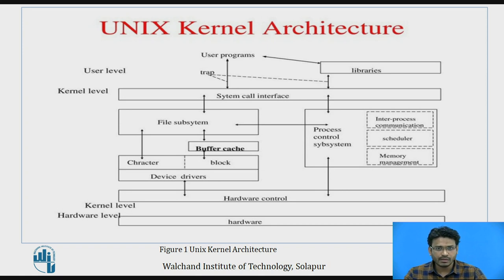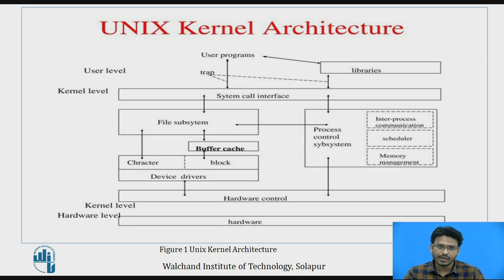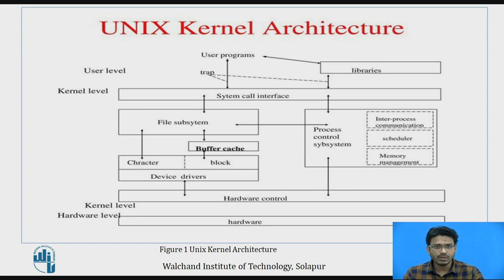In Unix, everything is treated as a file. When the kernel wants to read or write data from the hardware or disk, an important concept called buffer cache is used. Before writing any data onto the file system from the hardware or disk, it must first go into the buffer cache. If the kernel wants to write some data onto the buffer, then again we use the buffer cache.